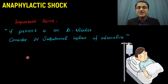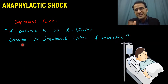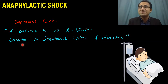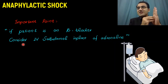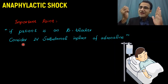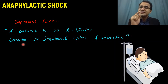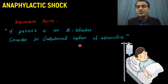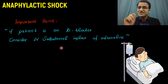An important point: if the patient is already on beta blockers — for example, for panic attacks, anxiety, Graves' disease, or any other chronic indication — adrenaline won't work in that patient, because the beta blocker has blocked the receptors where adrenaline acts. In such patients, consider giving IV salbutamol in place of adrenaline, so that salbutamol causes bronchodilation and protects them from respiratory arrest, which is the most dangerous complication of anaphylactic shock.